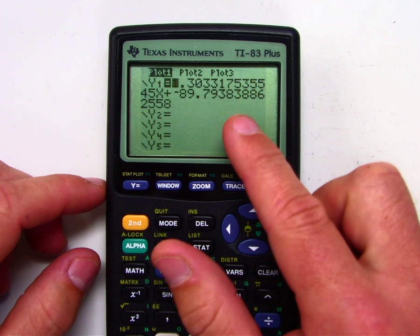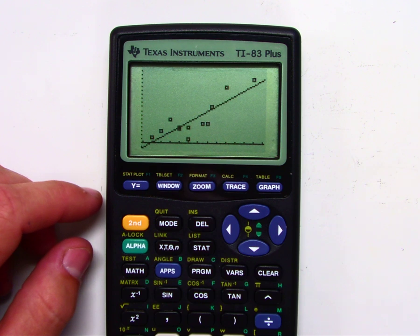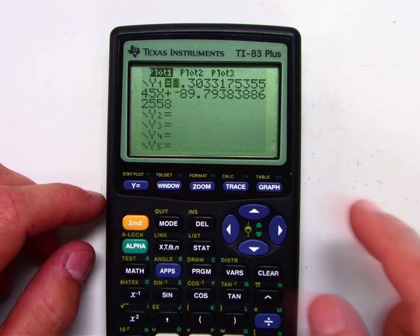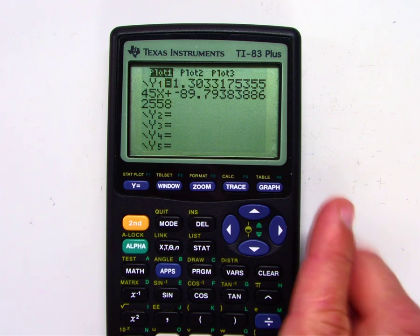So what we left off last time is we took our regression line and put it on top of a scatter plot. Now I'm going to show you how to do a residual plot, but before I do that, I want to briefly walk you through what a residual is so you have some understanding.